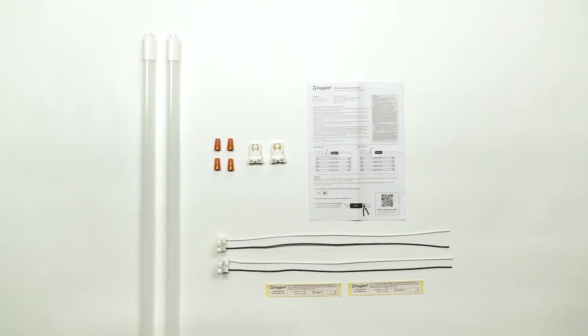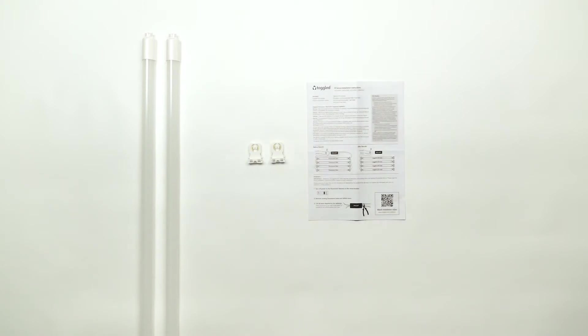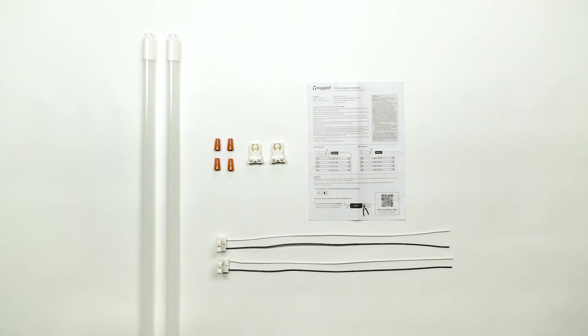If you've purchased your toggled product with the added convenience of an installation kit, each kit will include one or more toggled LED tubes, an installation guide, non-shunted lamp holders should shunted lamp holders be present, wire nuts, easy install pre-wired lamp holders, and fixture modification labels.